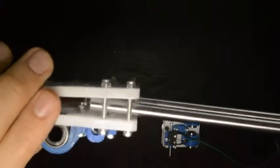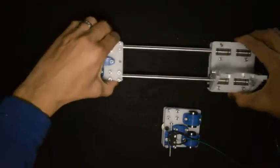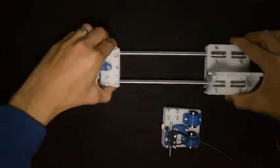And then we will tighten the screws that we only hand tightened previously. The function of these screws is to clamp the linear rods and hold them in place.